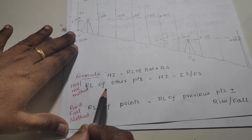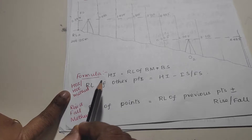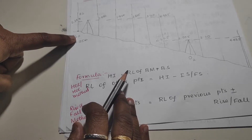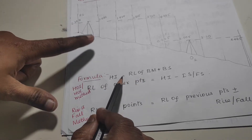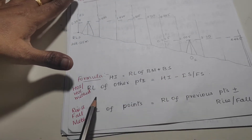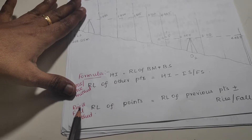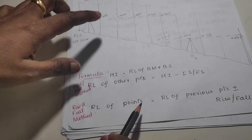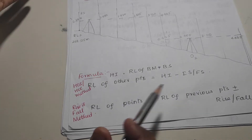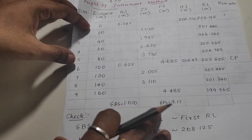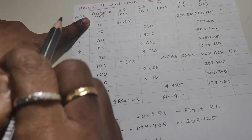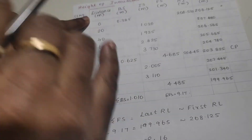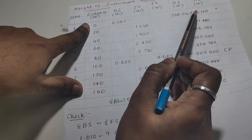We will use the height of instrument method in this video to find the RL of other points. The distance is 20, 40, 60, 80 meters. The columns are: backside, intermediate side, foresight, height of instrument, and RL.